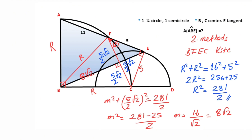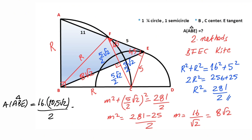M equals 8 root 2. Therefore the area of triangle ABE using the sine formula is: 16 times 10.5 root 2 over 2 times sine 45 degrees. Angle AEB must equal 45 degrees. Since sine 45 degrees equals root 2 over 2, simplifying gives the area of triangle ABE equal to 84 square units. Thanks for watching — if you want more videos like this, please like and subscribe to my channel.